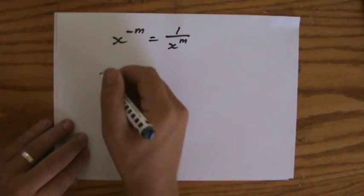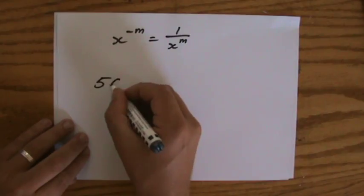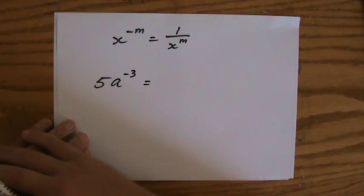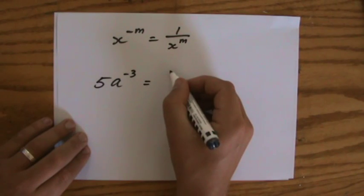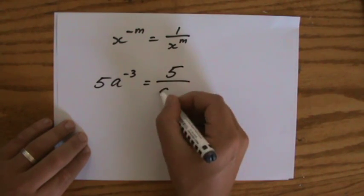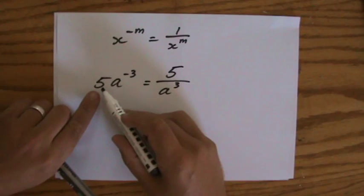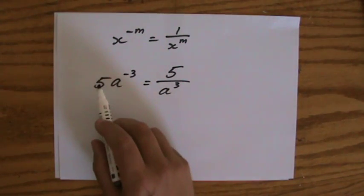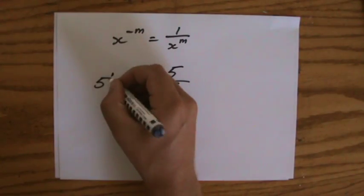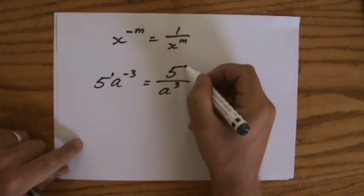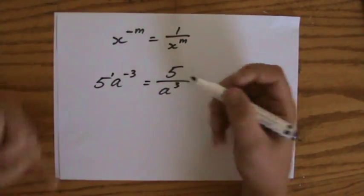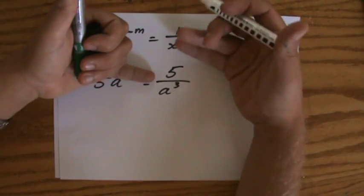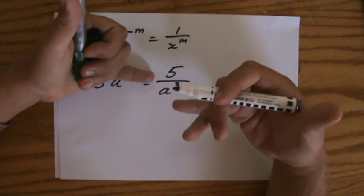Because I want to give you the example: 5a to the power minus 3 in positive index notation would be 5 over a to the power 3, because the coefficient stays in the numerator. Because what is the index of 5? That is to the power 1. So that's positive, so it stays in the numerator. It's only the a that is to the power minus 3, so that will go in positive index notation into the denominator.